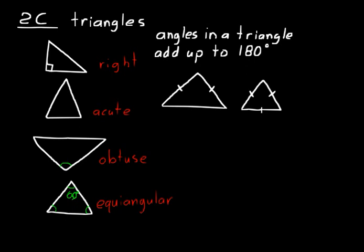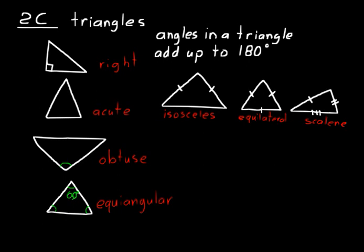A scalene triangle has no sides the same length. We represent that with one tick mark on one side, two on another, and three on the bottom, showing each side is different. Make sure you know the difference between those three types of triangles in terms of the lengths of their sides.